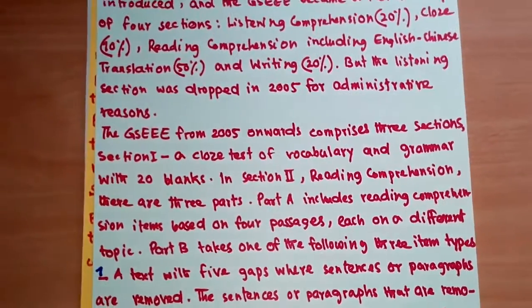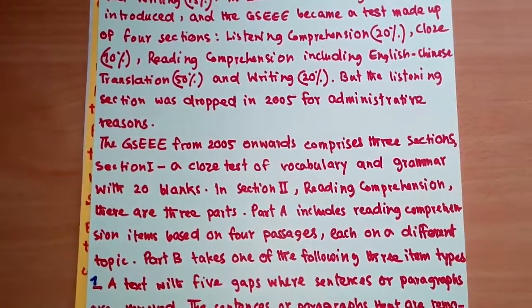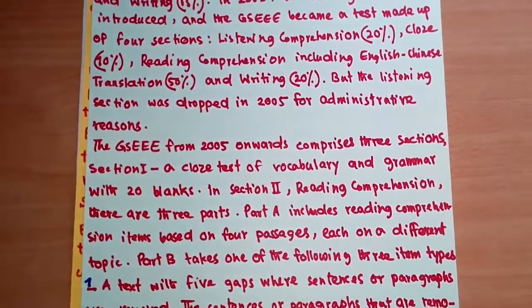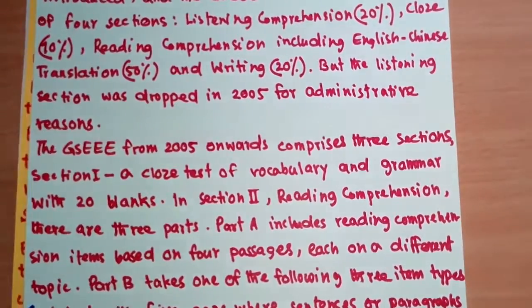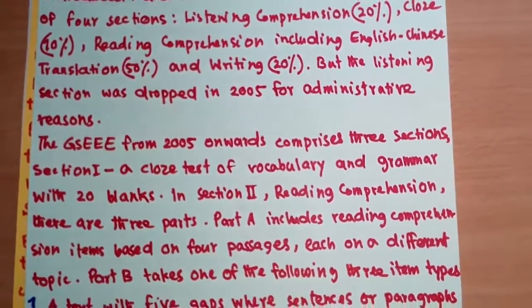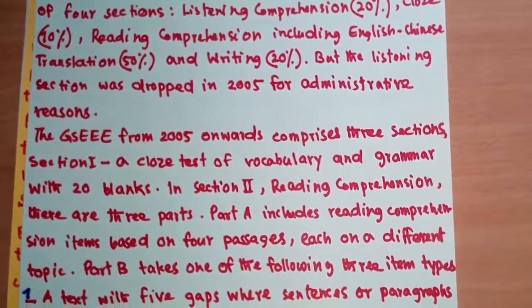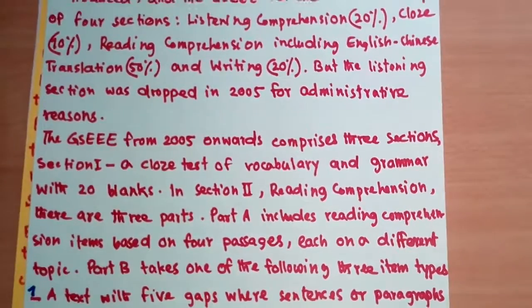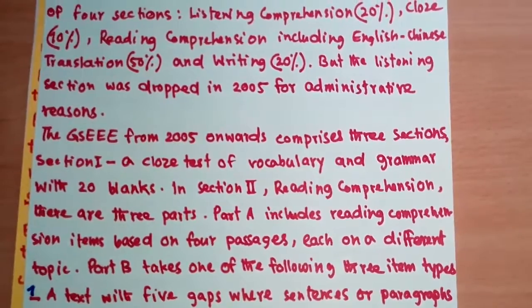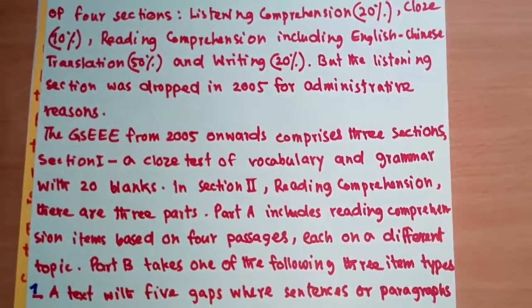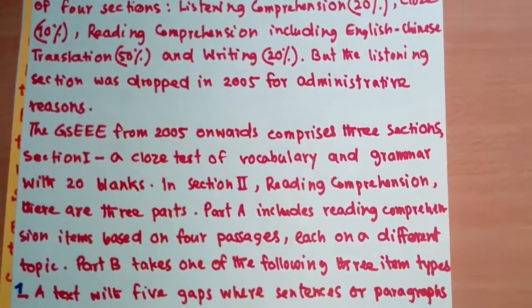From 2005 onwards, the GSEEE comprises three sections. Section 1 is a cloze test of vocabulary and grammar with blanks. Section 2 is reading comprehension, which has three parts. Part A includes reading comprehension items based on four passages, each on a different topic.